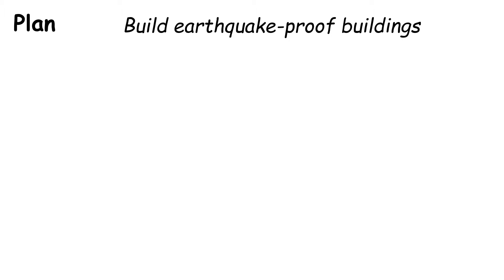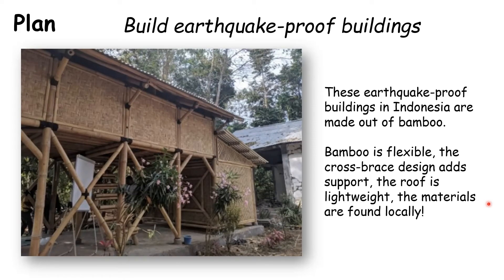Number one: we can plan for earthquakes, and the most common way of doing this is to build earthquake-proof buildings. Here's an example — these buildings in Indonesia are made out of bamboo. They're less likely to fall down because bamboo is flexible, and because of the cross-bracing built into the design, which helps the building absorb the impact of the earthquake. Furthermore, the roof is very lightweight, so if it collapsed you'd hope people wouldn't be harmed. All the materials are found locally, making it a sustainable solution.